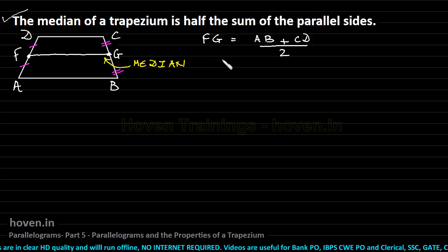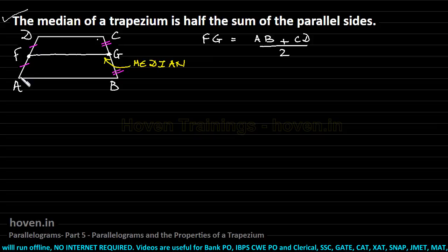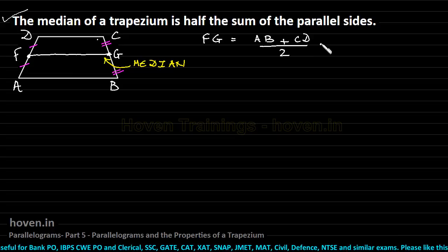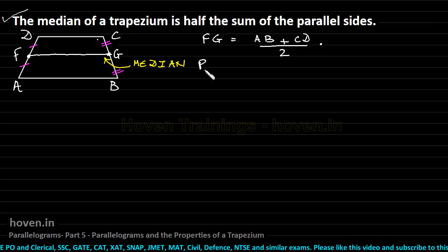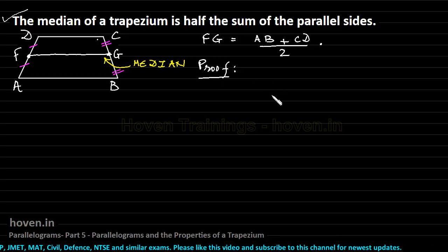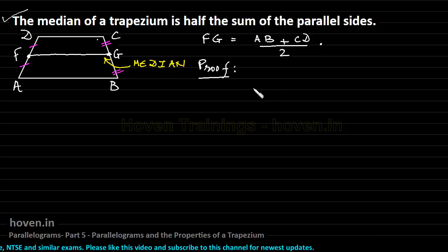In your exam, a question could give you the length of one parallel side and the other parallel side and ask for the length of the median. Then you simply apply this formula. You can either remember this formula or derive it from the proof. This way your logical and reasoning skills also develop, and you can derive this relation just in time as well.